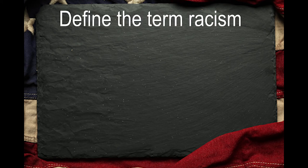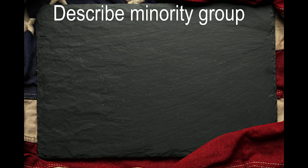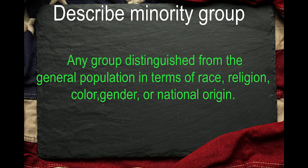Define the term racism. Any attitude or action of a person or institutional structure that subordinates a person or group because of skin color or race. Describe minority group. Any group distinguished from the general population in terms of race, religion, color, gender, or national origin.